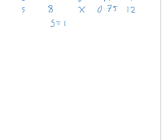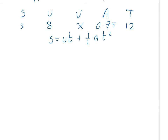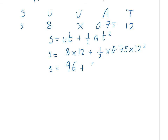S equals UT plus half AT squared. Putting in what we know: U is 8, T is 12, half times 0.75 times 12 squared. That gives 96 plus 54, which equals 150 metres.